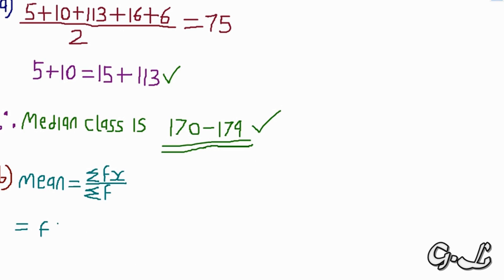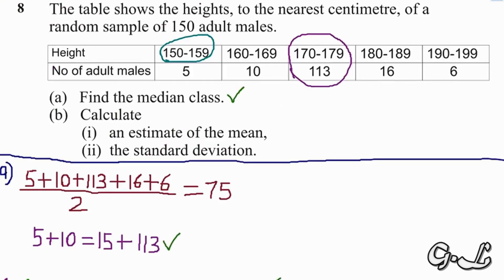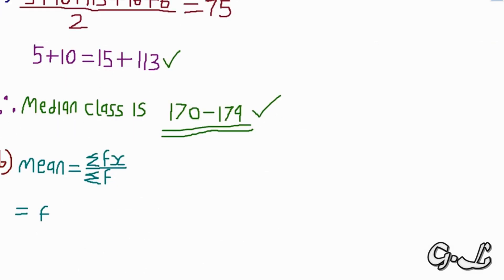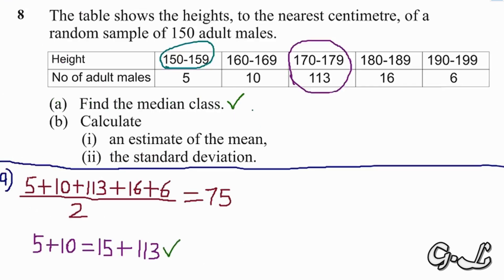To find the summation of fx, we need to find the midpoint height for each class. For the class 150 to 159, we can't use the class boundaries directly — we have to find the average height by adding 150 and 159 and dividing by 2.